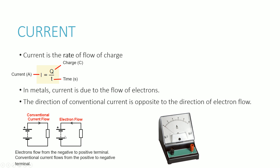If you take a look at the example on the right-hand side, you've got the positive terminal at the top and the negative terminal at the bottom for this battery. Electrons, being negative, will always move from negative to positive, therefore going in an anti-clockwise fashion. Conventional current, despite the fact that the electron flow is causing the current, the direction is opposite.